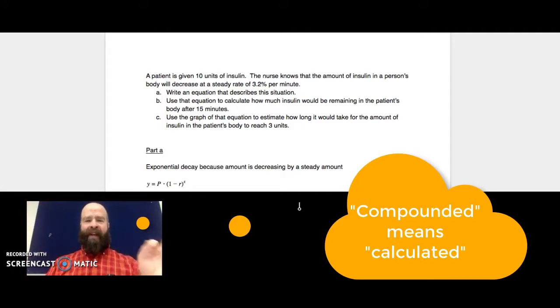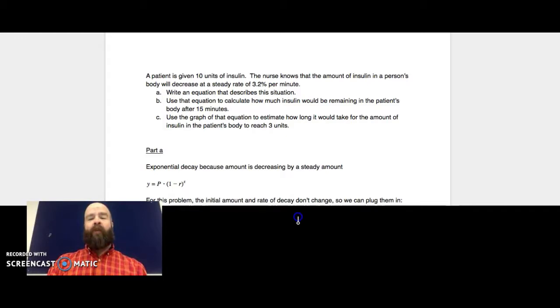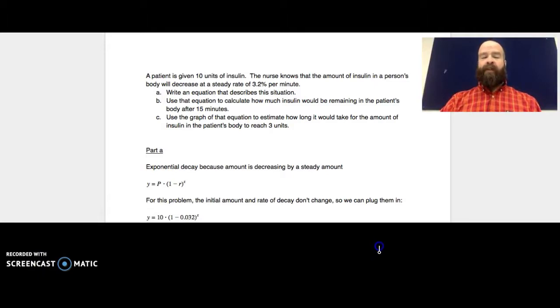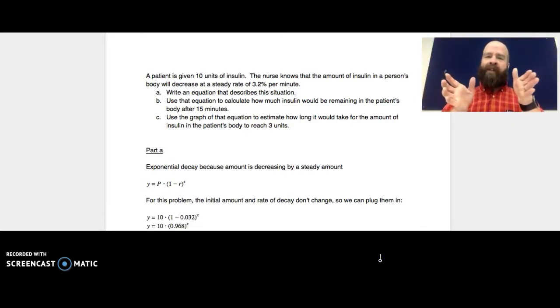So when this part A asks you to write an equation that describes this situation, what they're basically saying is take the things that you know aren't going to change in the problem, which are the initial amount and the rate of decay, which is that percentage, and go ahead and plug them in. And when we do that, it looks like this. The 10 is the initial amount, and the 0.032, which is the rate of decay, is causing that to go down. So that 0.032 is 3.2% written as a decimal. And I can simplify that so it looks like this. So this is all it's asking for when it asks for an equation that describes this situation. It's something that I can plug in x, which is the number of times it's compounded, and get back y, which is the final amount.